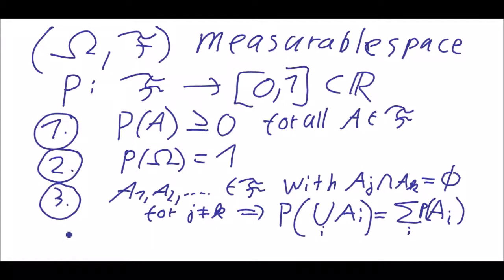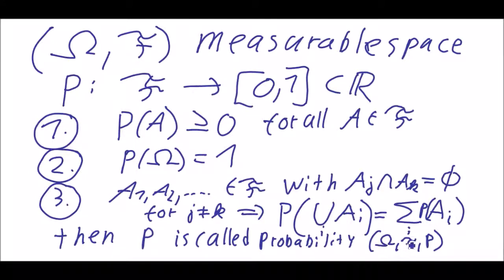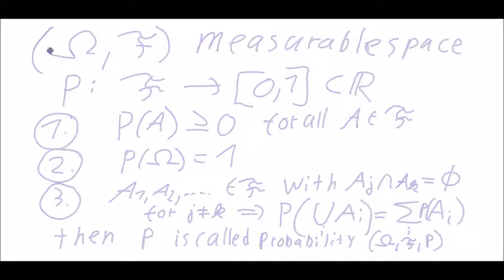This is what we call probability — P is called a probability measure. And Omega, F, and P together form a probability space. Now let's go back to the tennis match after all this theory.